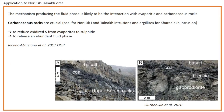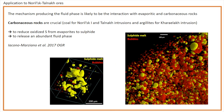We can now apply this concept to Norilsk-Talnakh ores, where the mechanism producing the fluid phase is likely to be the interaction of the magma with evaporitic and organic matter-rich rocks — coal in the case of Norilsk-1 and Talnakh intrusions, and argillites in the Kharaelakh intrusion. I stress the carbonaceous rocks, which are always forgotten, because they are critical to reduce the oxidized sulfur of evaporites into a sulfide melt, and also critical to release an abundant fluid phase, of which Norilsk-Talnakh intrusions present extremely abundant evidence. This interaction experiment, in particular, is probably the one that best reproduces the sulfide and fluid-generating mechanism at Norilsk.